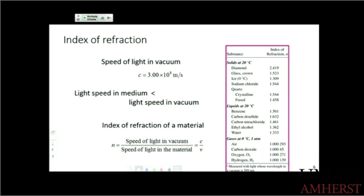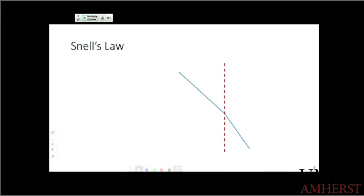Glass of various kinds, quartz, crystalline or fused quartz has a high index. You notice the thing that has a really high index is diamond. And so the things that have higher indices of refraction are things that sparkle a lot.